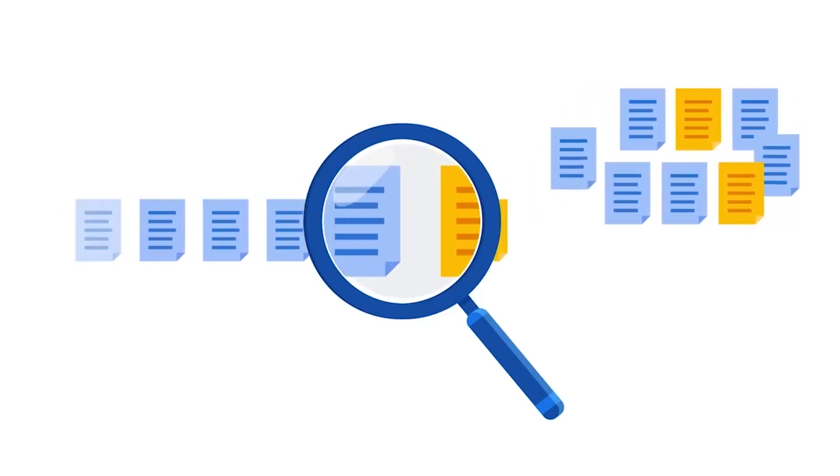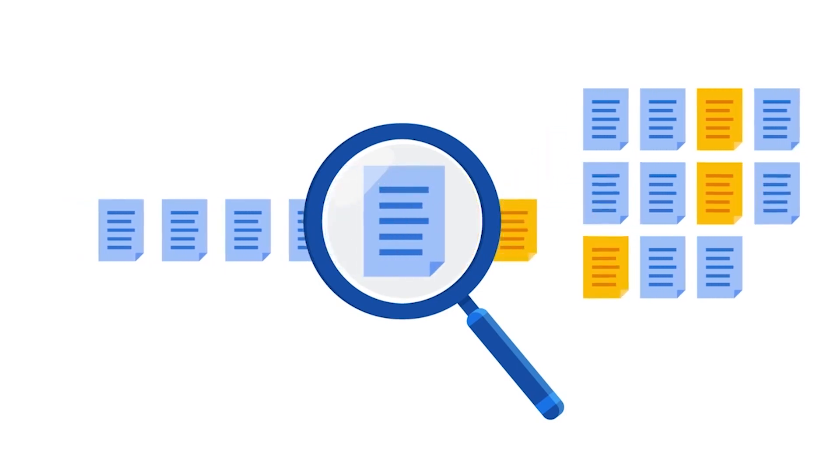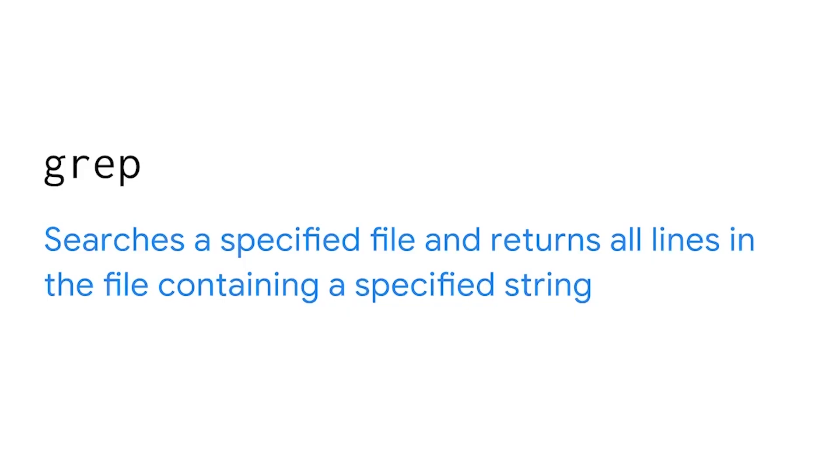Now that we've covered pwd, ls, and cd, and are familiar with these basic commands for navigating the Linux file system, let's look at a couple of ways to find what you need within this system. As a security analyst, your work will likely involve filtering for information — searching your system for specific information that can help you solve complex problems. We'll start with grep.